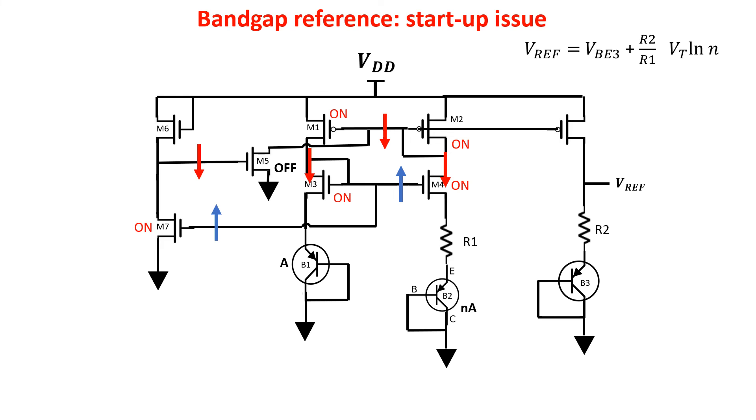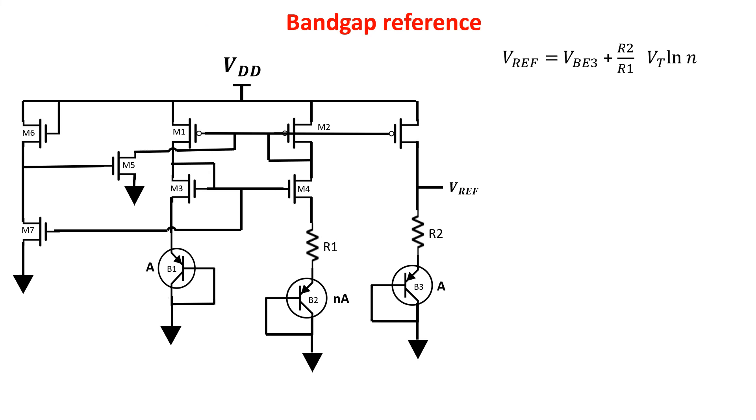Now we have on M6 a large voltage drop, being it a small MOSFET with a large resistance, and on M7 a small voltage drop, being it a large MOSFET with a small resistance, thus keeping off M5. So this is finally the circuit which produces the bandgap reference voltage.